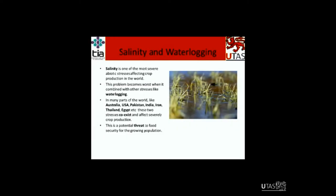In my project, I'm looking at two kinds of stresses, which are called salinity and waterlogging. Salinity is one of the most severe abiotic stresses affecting crop production in the world, and this stress becomes worse when combined with another stress like waterlogging. In many parts of the world, like here in Australia, USA, Pakistan, India, Iran, Thailand, Egypt, and many other countries, these two stresses coexist and they severely affect crop production.